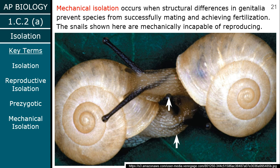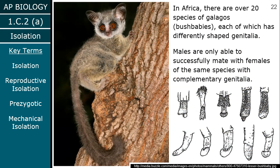Mechanical isolation is when there's some kind of structural difference in genitalia that prevents organisms from successfully mating. In Africa, there are over 20 species of bush babies and they all have different shaped genitalia. Males can only successfully mate with females that have the right complement — it's like a puzzle piece. If you don't have the right piece, it won't fit.